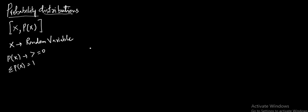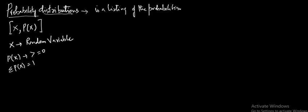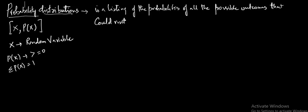Now let me go to the explanation of the probability distribution. The probability distribution is a listing of the probabilities of all the possible outcomes that could result if an experiment is done.